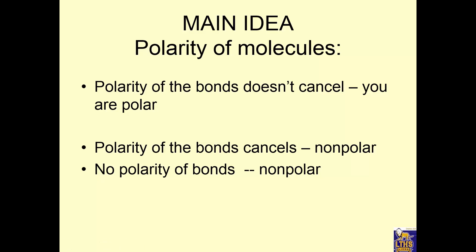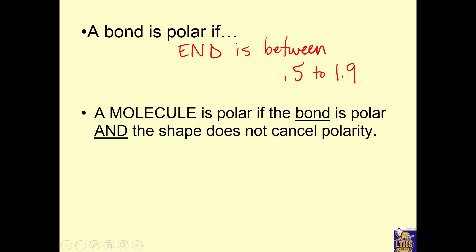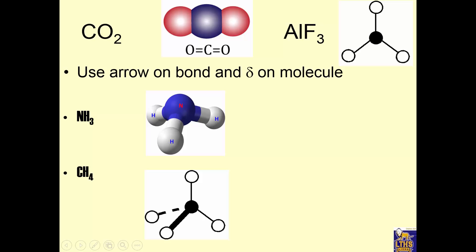Here's the main idea for polarity of molecules. If the polarity of the bonds doesn't cancel, then it's a polar molecule. If the polarity of the bonds cancels, it's a non-polar molecule. Or if there was no polarity of bonds in the first place, it's non-polar — no arrows at all on bonds means non-polar molecules. The bond is polar if the electronegativity difference is between 0.5 and 1.9. A molecule is polar if the bonds are polar and the shape doesn't cancel. Look — it's CO2 again. Polar bond, polar bond, cancels out — no polarity on the molecule.